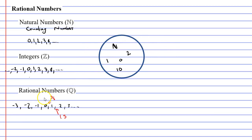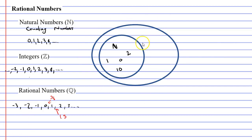We then want to extend our diagram to include integers. So I put this oval shape which encapsulates my natural numbers, and I'm going to write Z for my integers. I also want to put some examples of integers here — my negative numbers, such as negative 1, negative 2, even negative 5 or negative 10. As I mentioned before, the integers are the negative numbers as well as the natural numbers. I don't have to write any of my natural numbers over here, because the integers encapsulate the natural numbers.